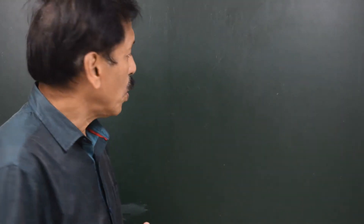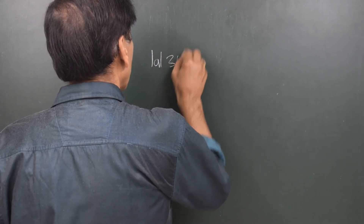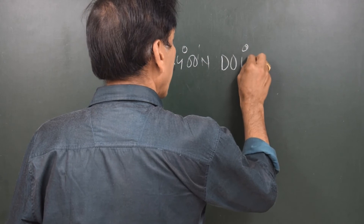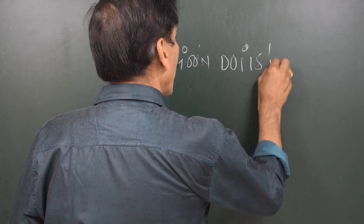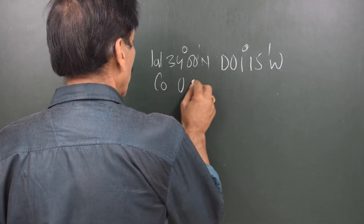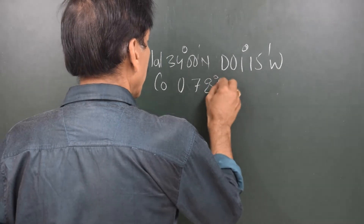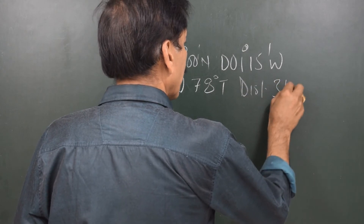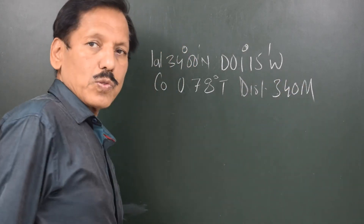We can do one more calculation — find the final position given the initial position, course, and distance. Let us say you are close to the Greenwich Meridian, at latitude 34° 00' N, longitude 001° 15' W. From there you are going on a course of 078° true, and the distance travelled is 340 miles. What is the final position arrived?